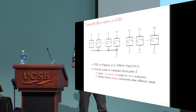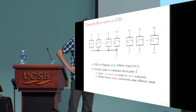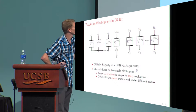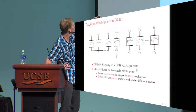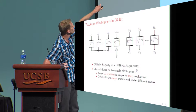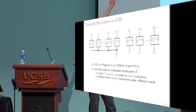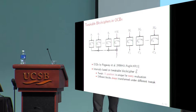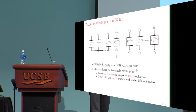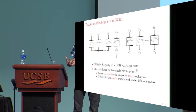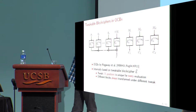I think it's one of the pioneering designs in using tweakable block ciphers for such applications, and it also shows why tweakable block ciphers are interesting and important for security analysis. What we see here is an authenticated encryption scheme where A is associated data, M is the message, and you get a ciphertext and a tag. We use a tweakable block cipher everywhere, where the tweak consists of a nonce and some position identifier.